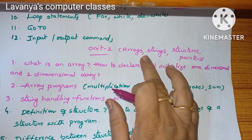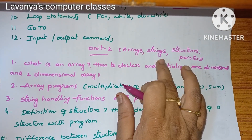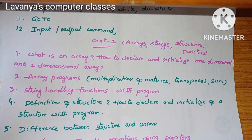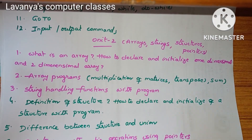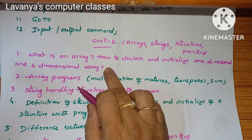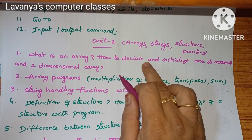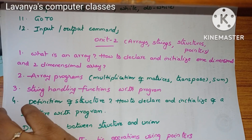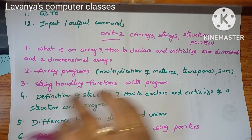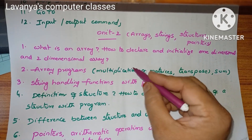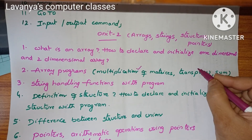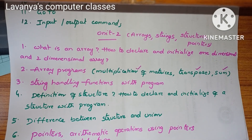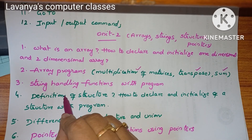Units 2 and 3 cover arrays, strings, structures, and pointers. For arrays: what is an array, types of arrays, how to declare and initialize one-dimensional and two-dimensional arrays. Array programs are very very important — multiplication of two matrices, transpose of a matrix, and sum of two matrices. Concentrate on these three programs.